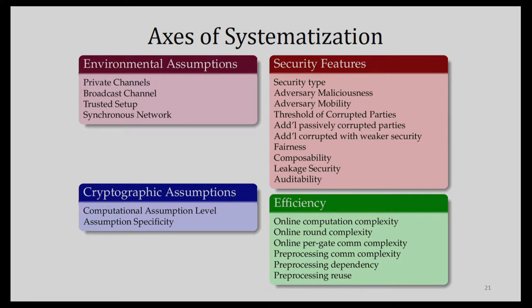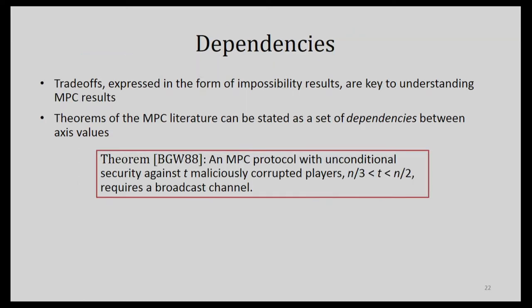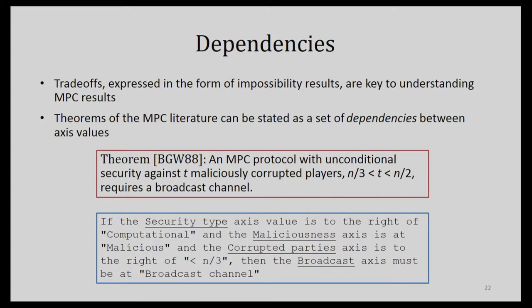When one axis slides one way, another has to slide the other way because we know it's impossible to do better in that scenario — for example, if you want unconditional security against a malicious adversary to do better than n over three, you have to have a broadcast channel. We chose our axes so you can encode such theorems simply: if you slide this one too far one way, you can't slide the other one too far the other way. That's what we mean by systematizing multi-party computation.